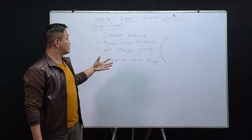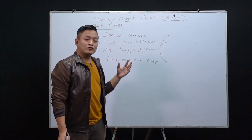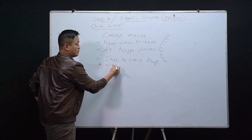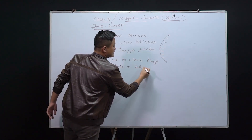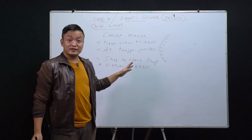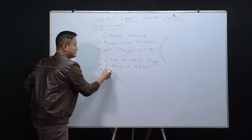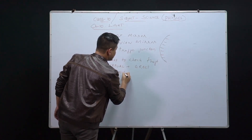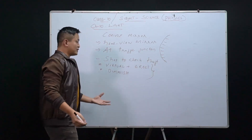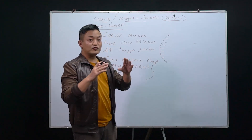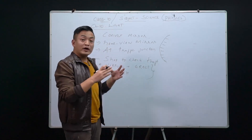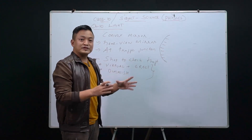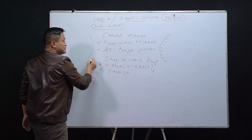In an exam for objective questions, they might ask why we use a convex mirror as a rearview mirror in a car, at a traffic junction, or at a shop. The reason is that a convex mirror gives you a virtual, erect image, and the size is diminished — that means it is small. But you get a wider field of view, so you can see a greater picture.